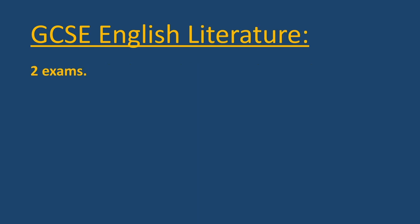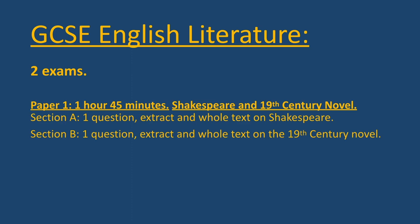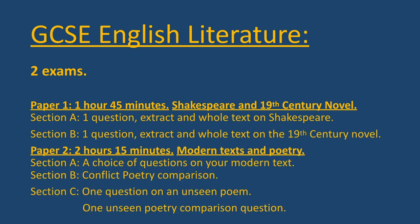GCSE English Literature is also two exams. Paper One is one hour and 45 minutes and covers Shakespeare and the 19th century novel. For Section A you answer one question — an extract and whole text question on Shakespeare — and for Section B you answer one question, again an extract and whole text question, on the 19th century novel.